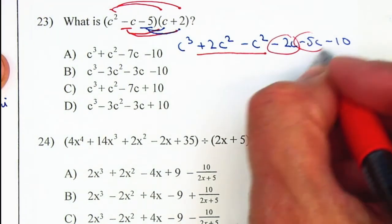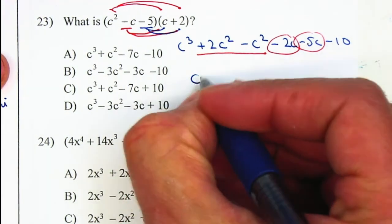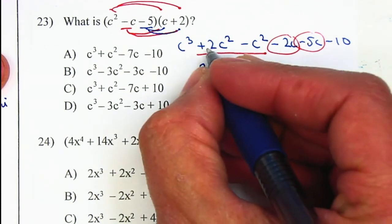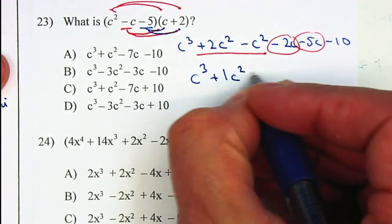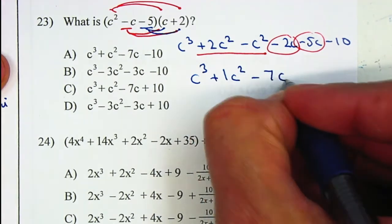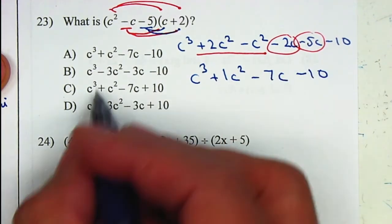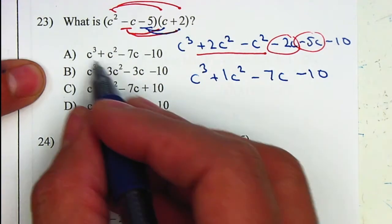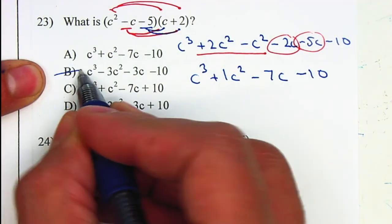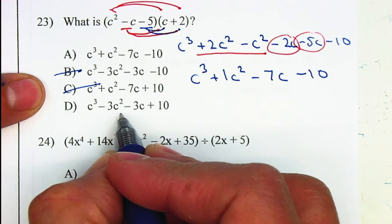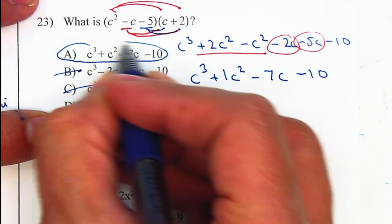From here I can combine like terms. Combining the c squared terms: 2c squared minus 1c squared is positive 1c squared. That gives me c to the third power, plus c squared, minus 7c, minus 10. All of them look very similar, so be careful. The answer is letter A.